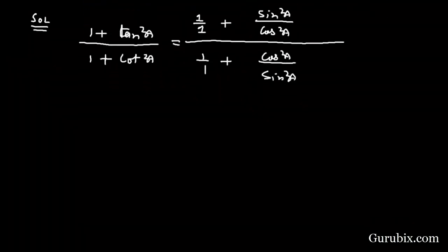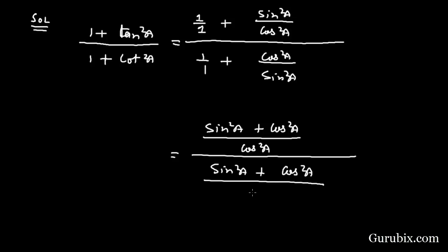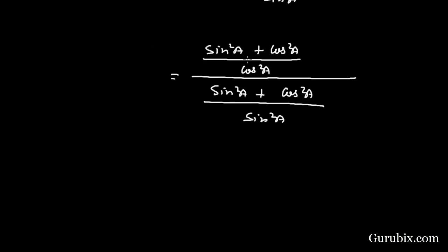Now we shall take LCM both in the numerator and denominator. It becomes (sin²A + cos²A) / cos²A in the numerator, and (sin²A + cos²A) / sin²A in the denominator. We know that sin²A + cos²A = 1, so we have 1/cos²A over 1/sin²A.